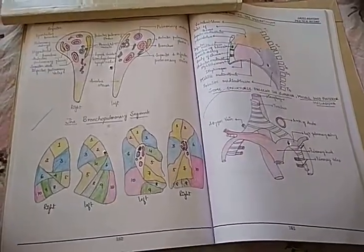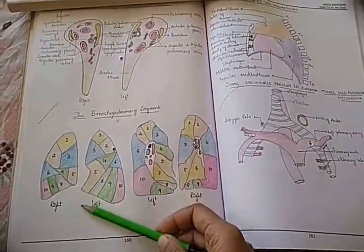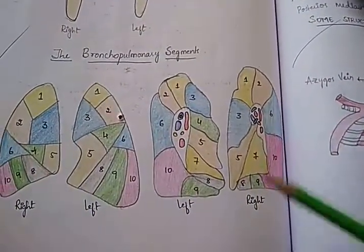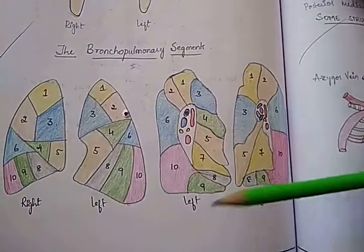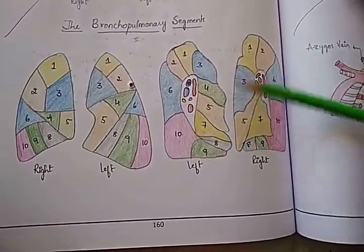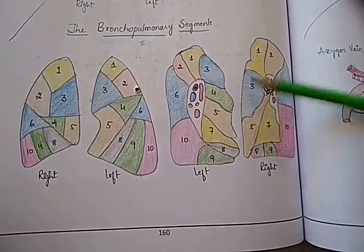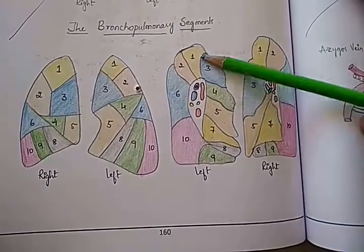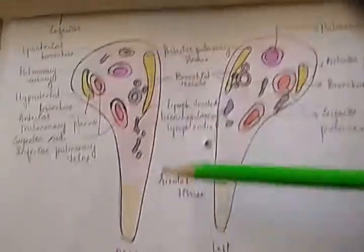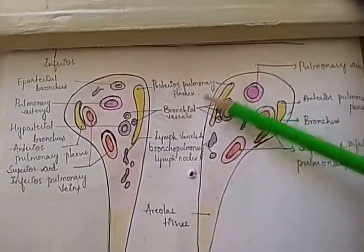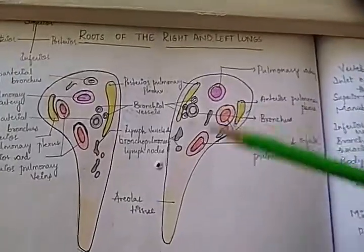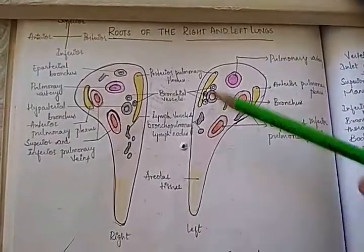So beautifully drawn. Guys, these are the lungs, the bronchopulmonary segments. I think this is anterior, posterior, but they didn't label it. Or this is the cross section, is it? Oh, this is the hilar. From the hilar side, they're looking at it. What is this? Did they label this? Roots of the right and left lungs, these are.